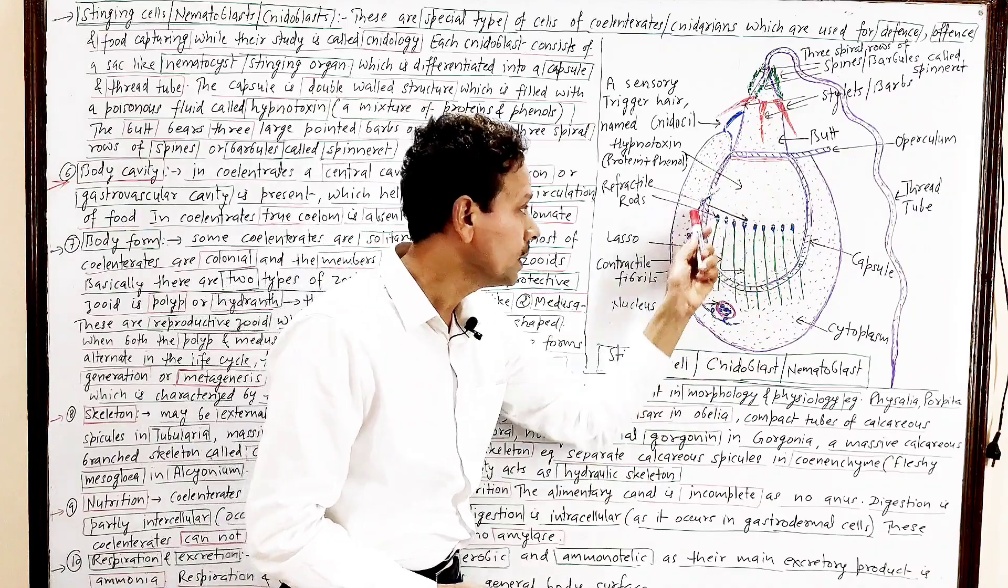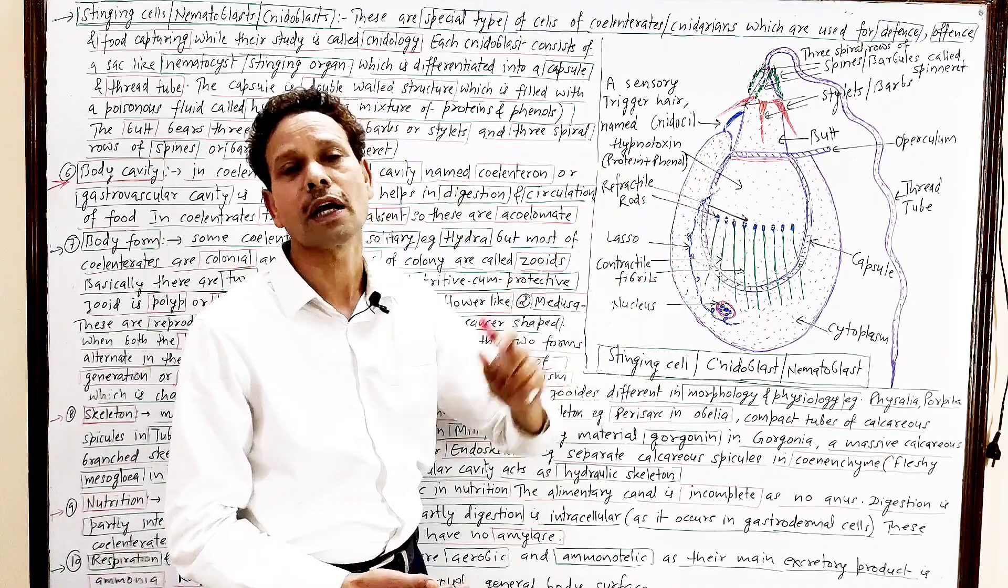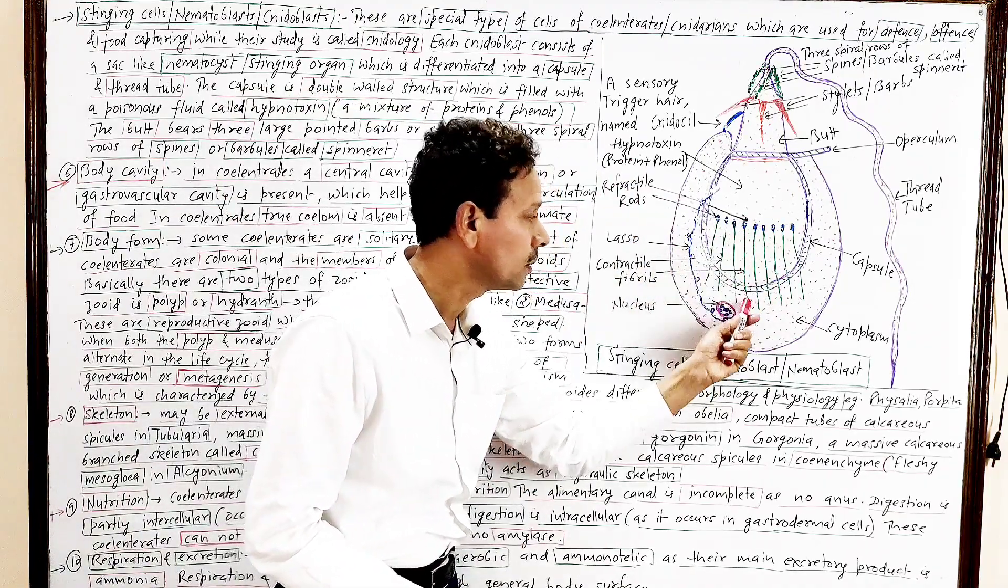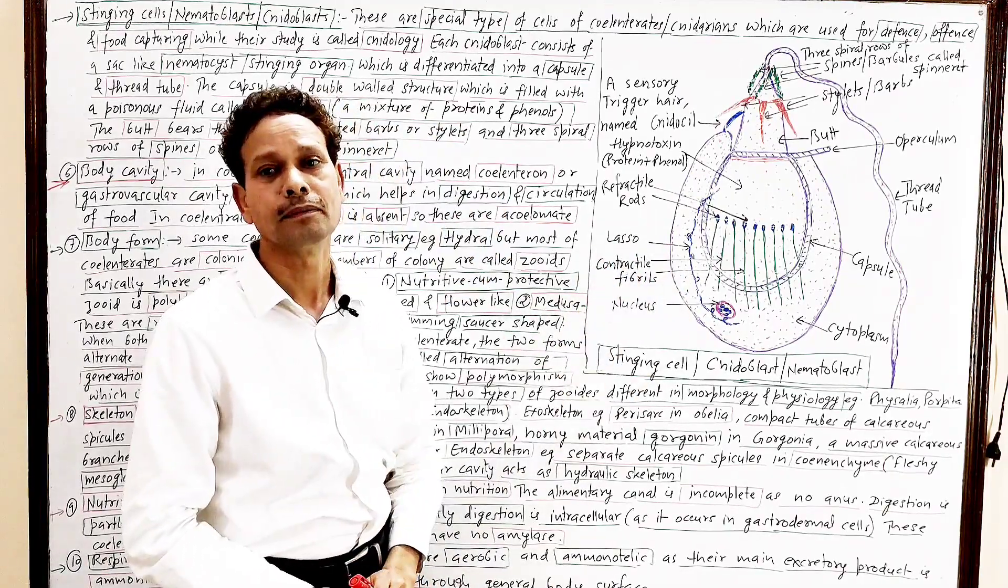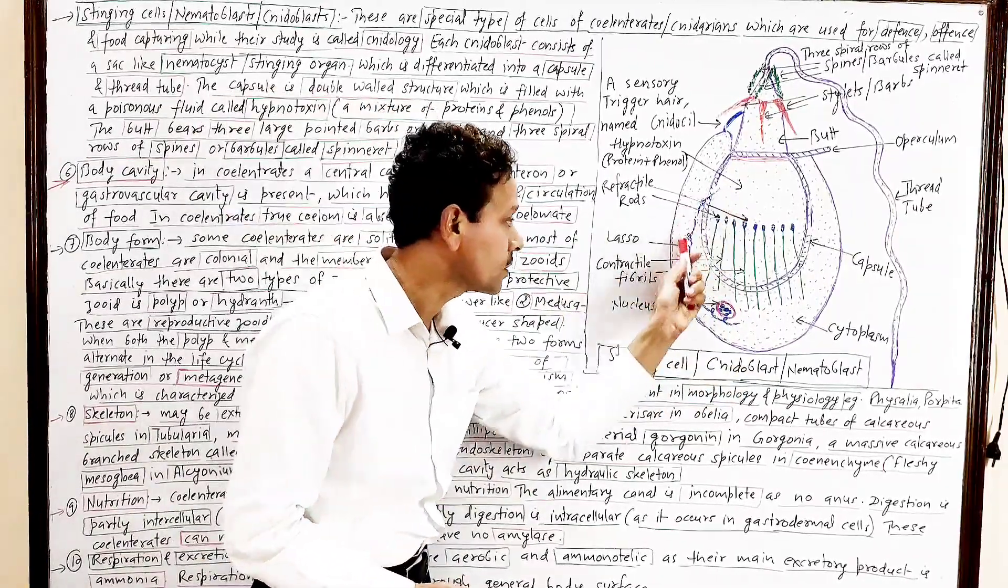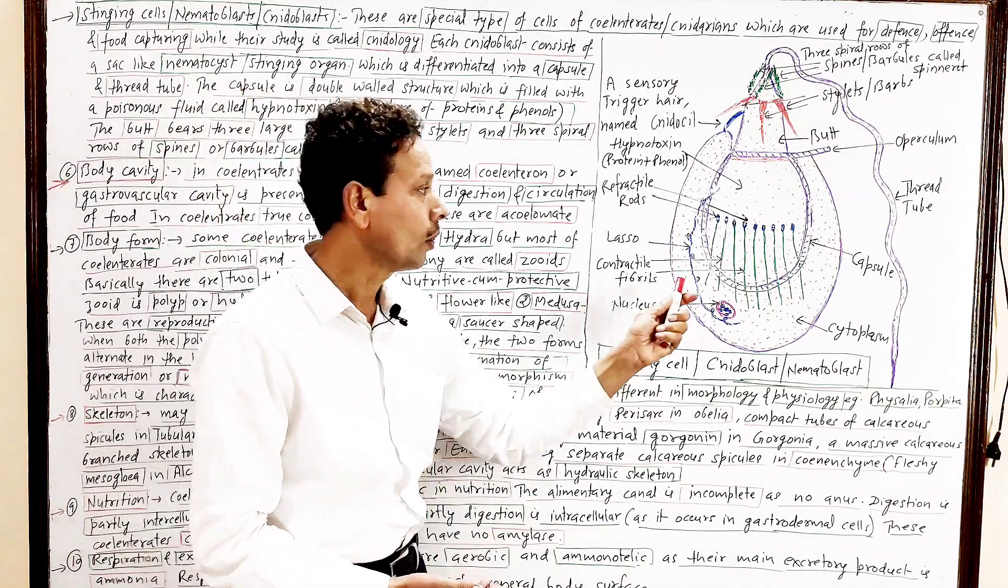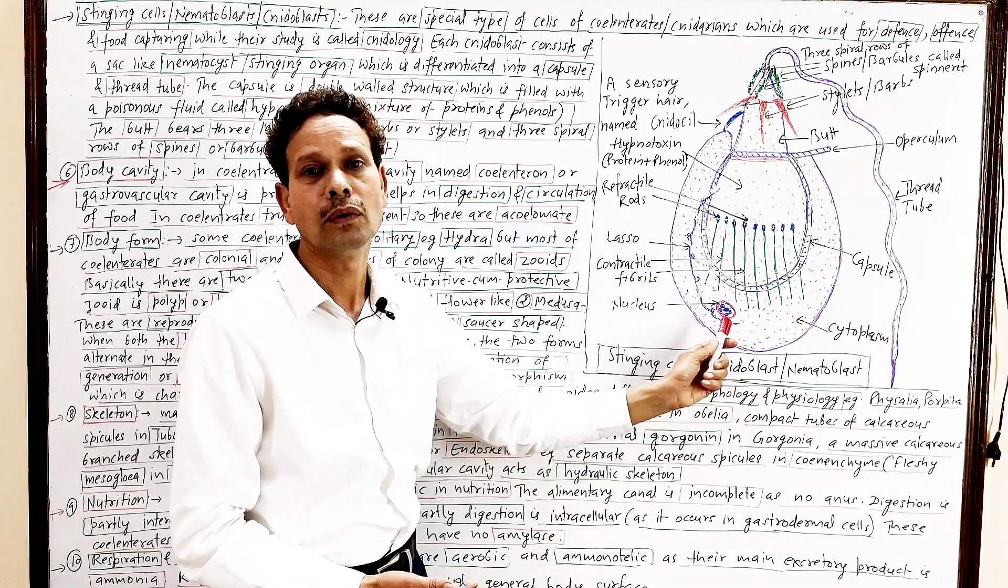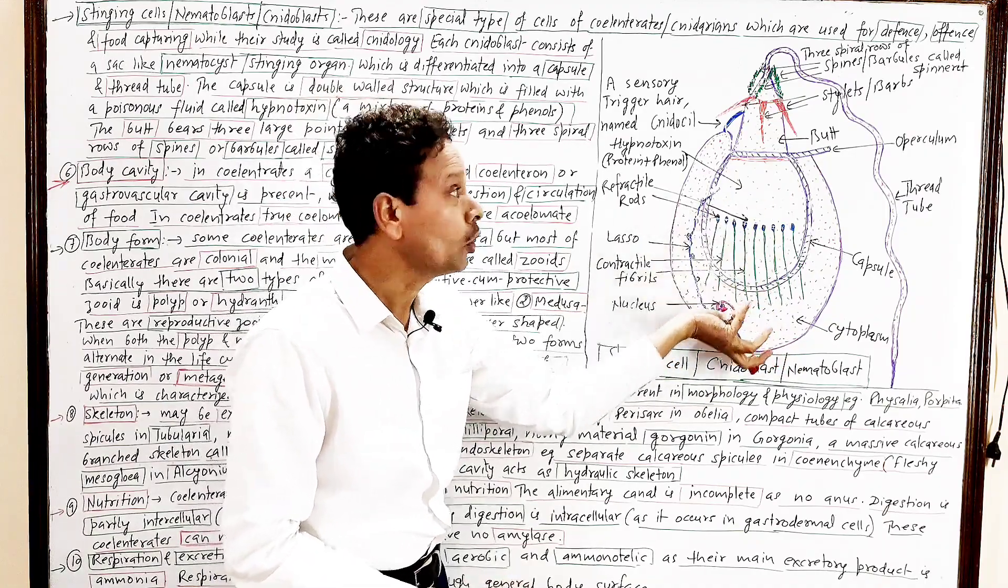On the surface of this capsule, we can see some refractile rods are present, and these refractile rods gives rise to fine thread-like contractile fibers. As well as in this structure, in this stinging cell, another thread-like structure, and this thread-like structure is lasso. So all these structures, contractile fibers and this lasso, prevent this capsule from being protrusion at the time of discharge of nematocysts.